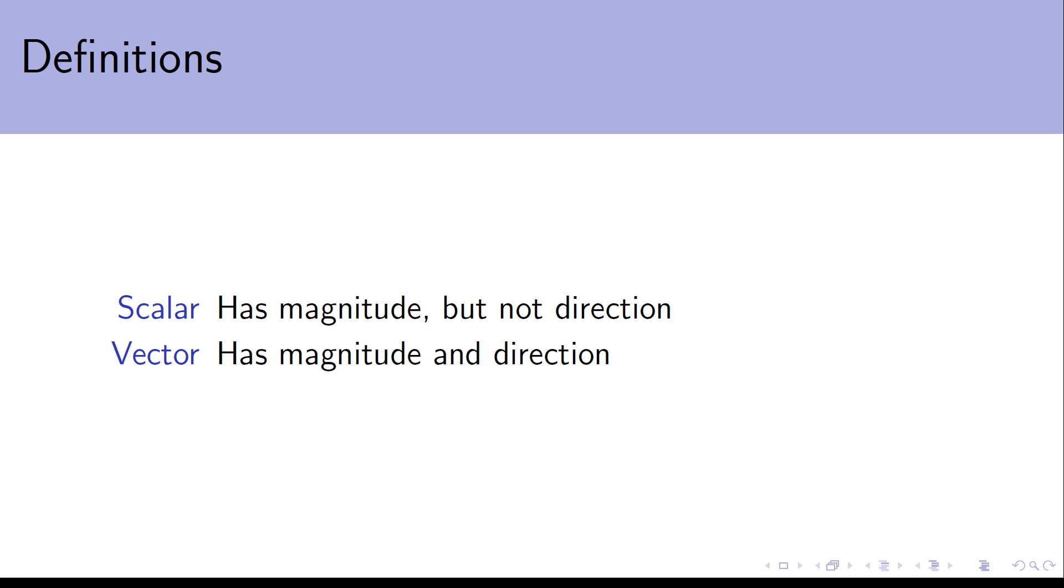Whereas an example of a vector might be a force. So I might exert a force of 50 newtons on something, but I don't just exert that 50 newton magnitude. I apply that force in some direction. So I might be pushing something or I might be pulling something. I might be going left or right or up or down or forwards or backwards. I apply that force in a direction, so it has both magnitude and direction, making it a vector.